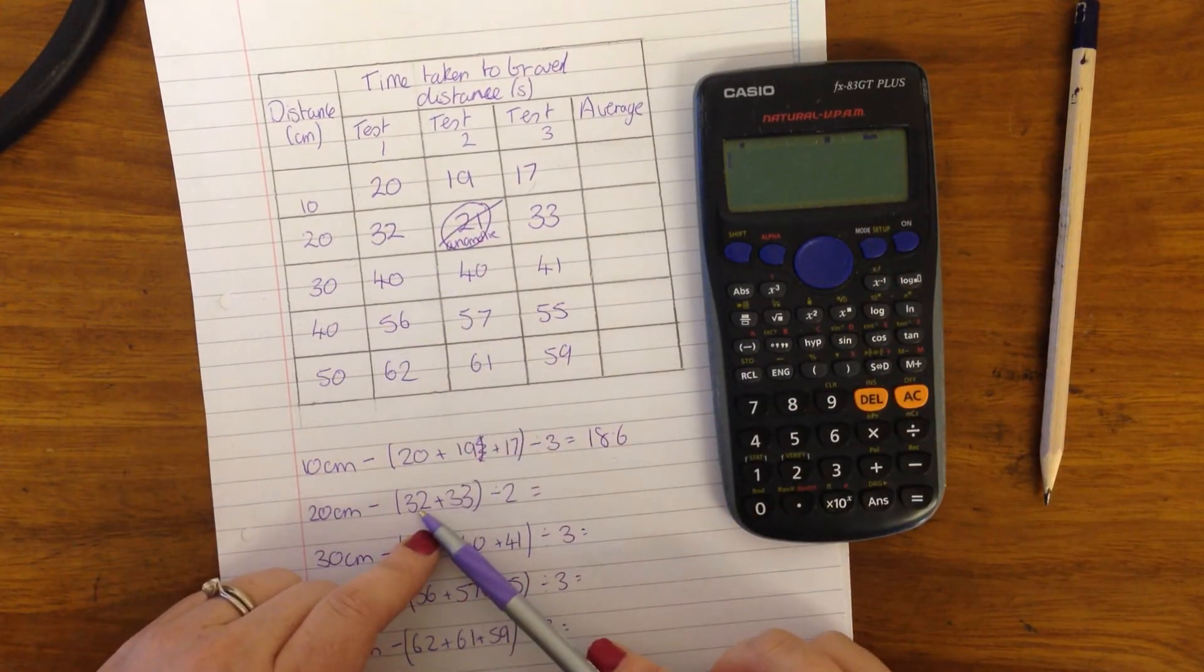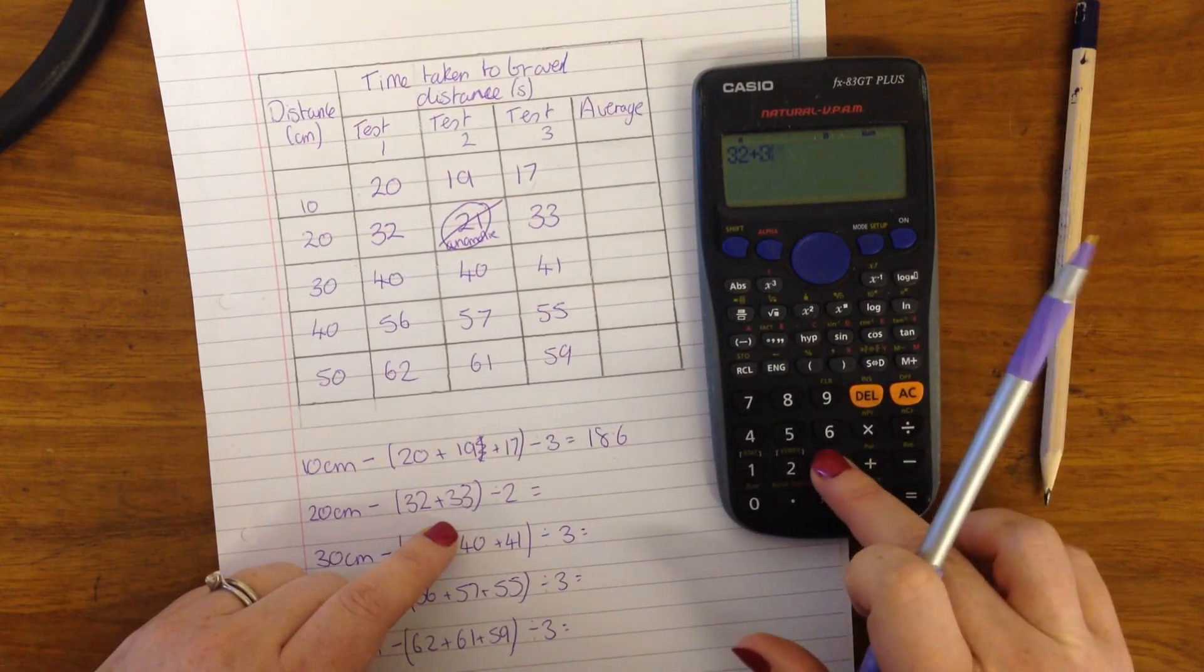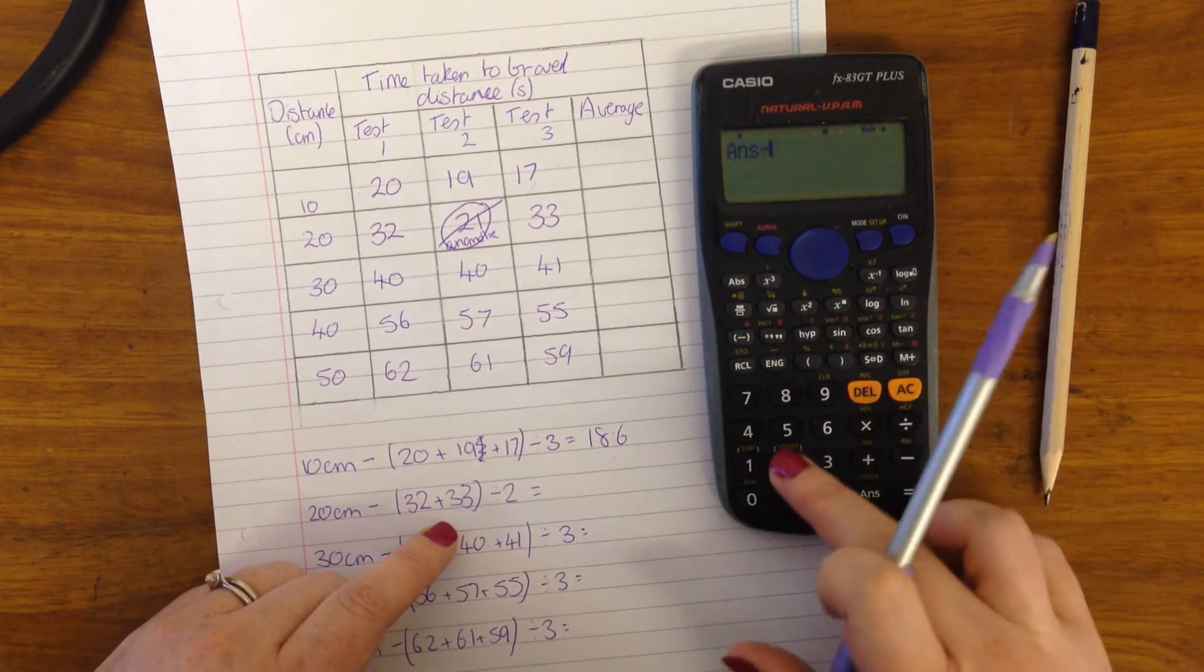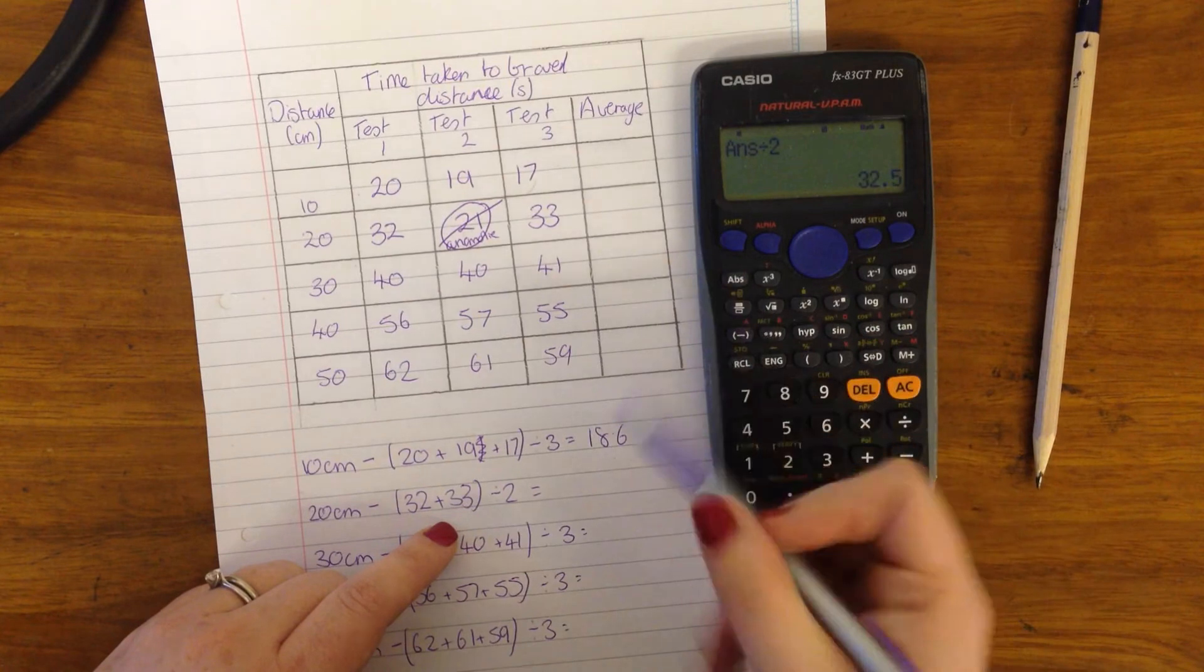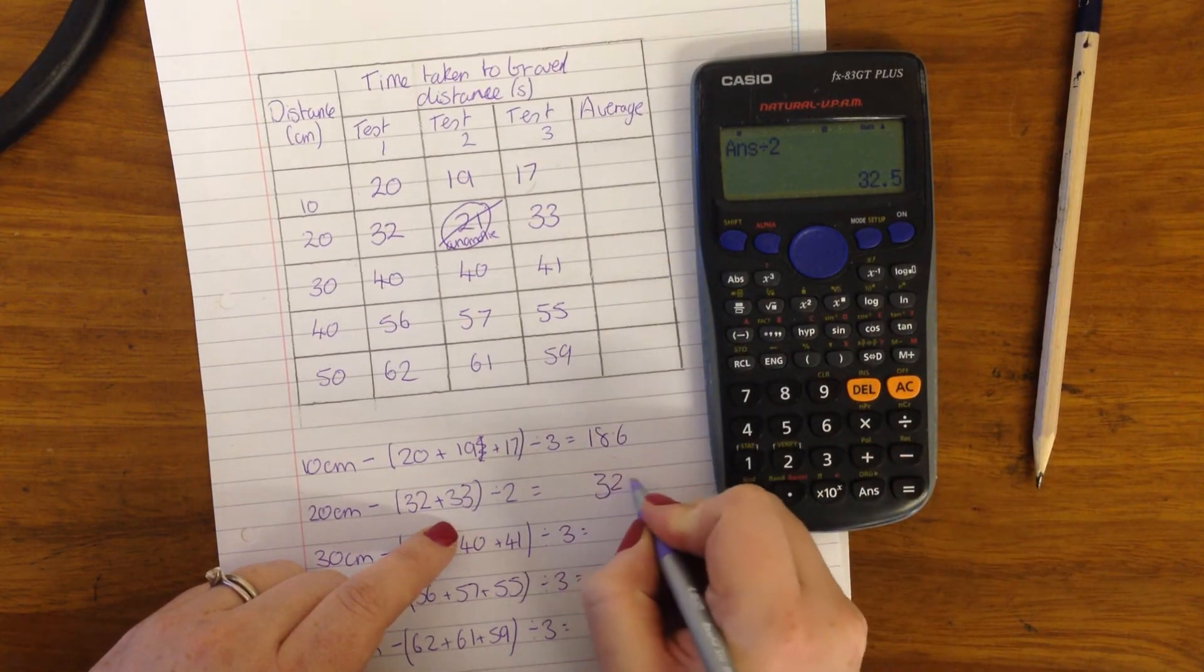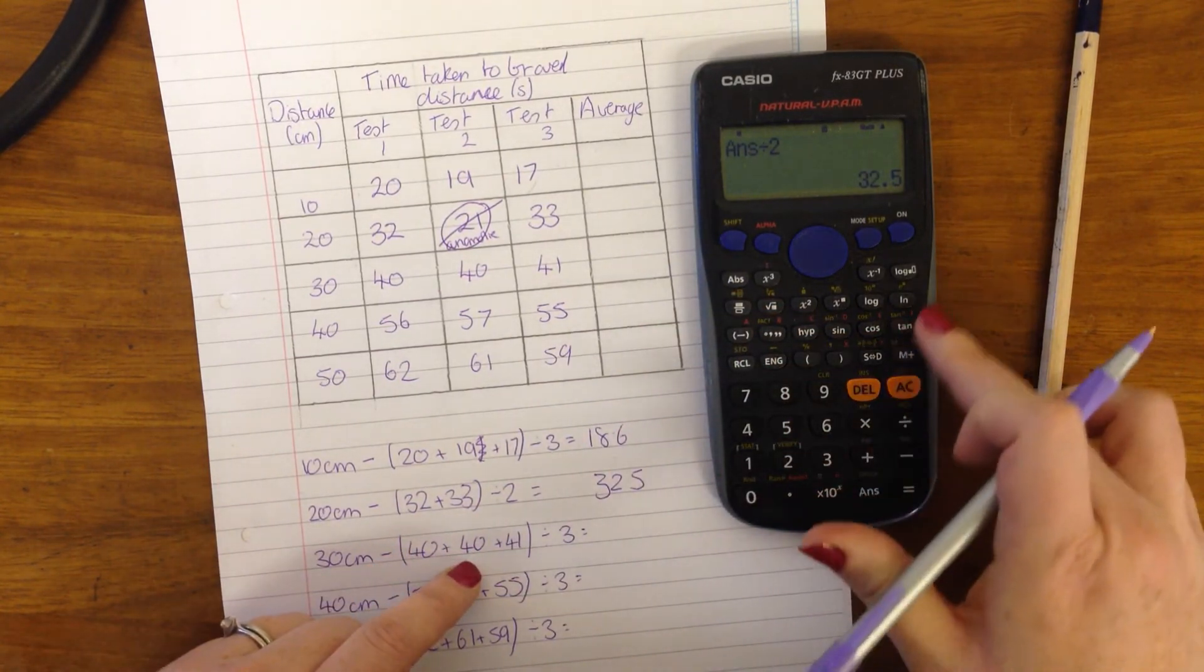Here, because of the anomaly, I'm only doing 32 plus 33 equals, and I'm dividing it by 2. So 32.5, that's nice, that fits in with our pattern.